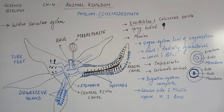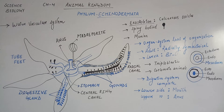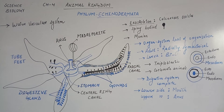Echinodermata के Examples हैं: Starfish जिसको हम Asterias बोलते हैं, Sea Urchins जिसको हम Echinus बोलेंगे, Sea Lily - Antedon, Cucumaria जो Sea Cucumber है, और Ophiura जो Brittle Star है. So with this, we are done with Phylum Echinodermata.